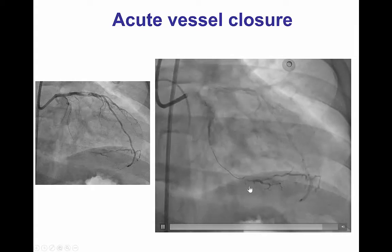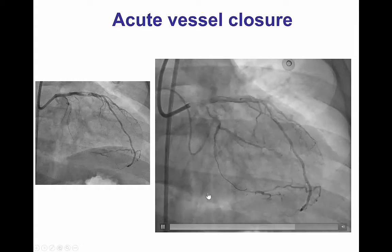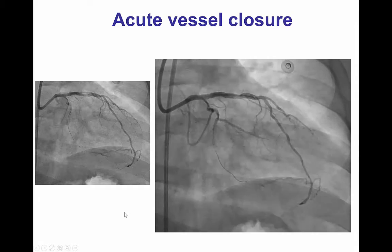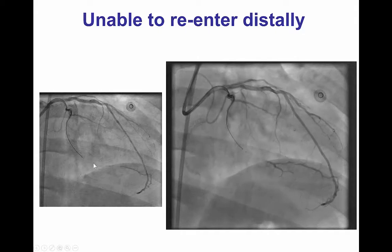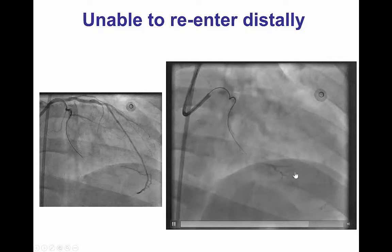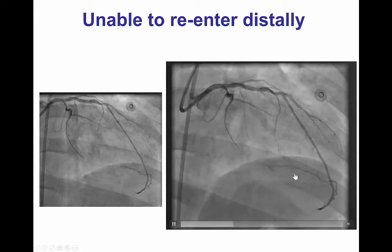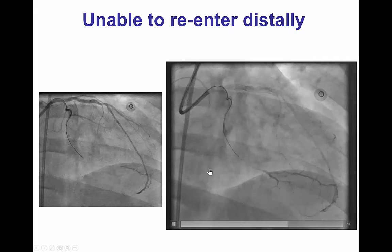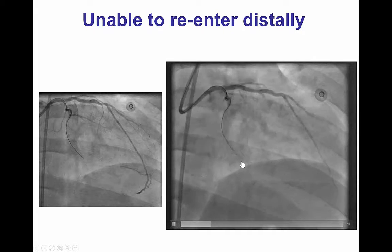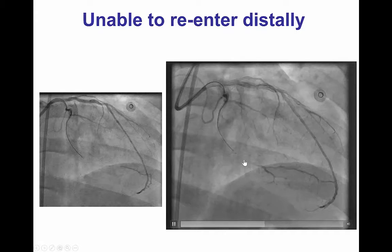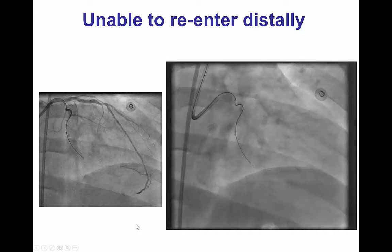The patient at this point started having chest discomfort and electrocardiographic changes. We did multiple attempts to advance a wire into the true lumen of the second obtuse marginal branch. However, we were unable to do so even when we used an antegrade stingray balloon and guidewire — we could not get re-entry into the distal true lumen.